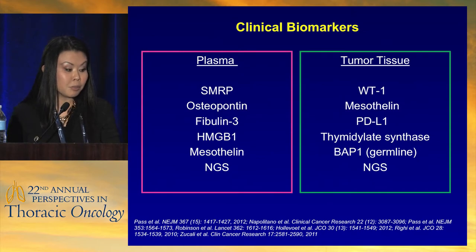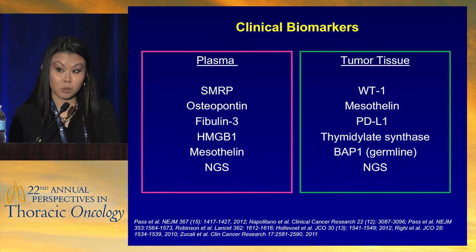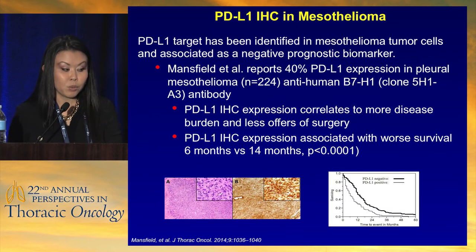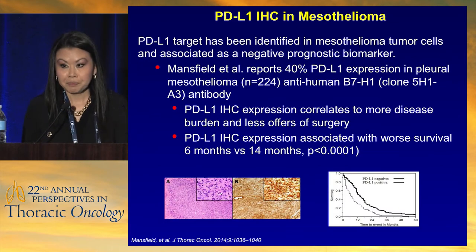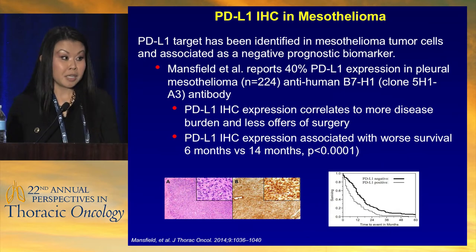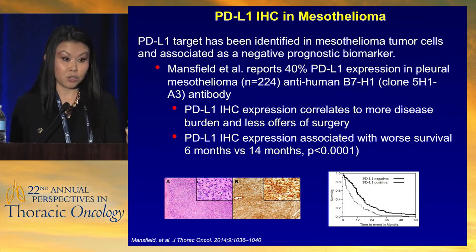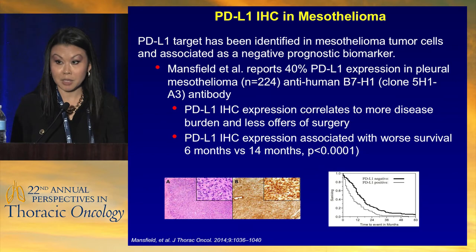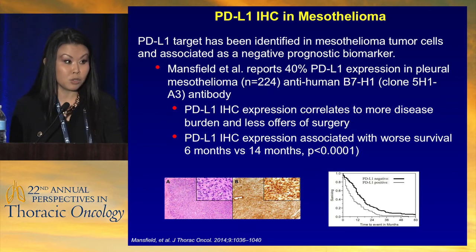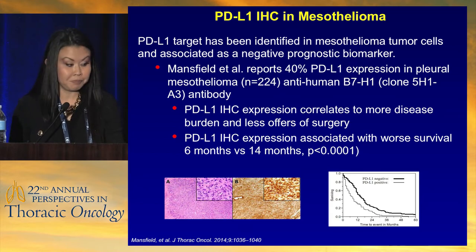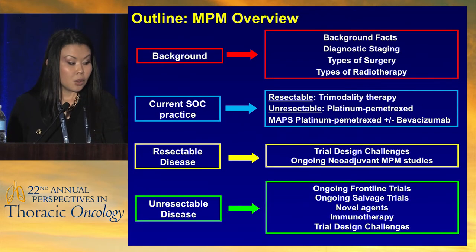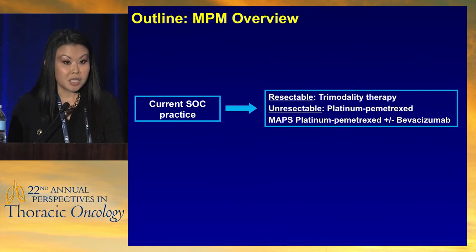There are several clinical biomarkers I wouldn't worry too much about right now — we don't utilize them at this time but will in the future. PDL1 IHC expression, just as in other solid tumors, is also seen in mesothelioma. It generally portends a poor prognosis and tends to be seen more in sarcomatoid tumors.